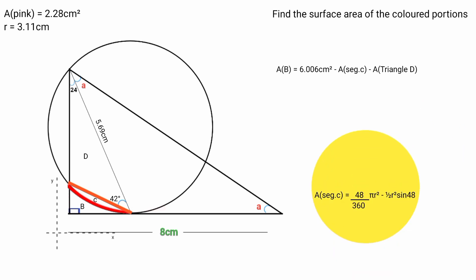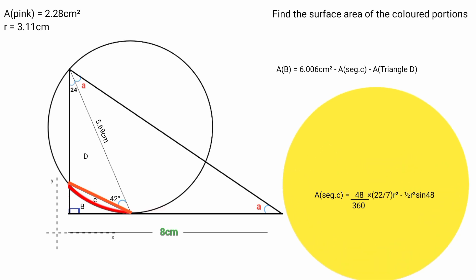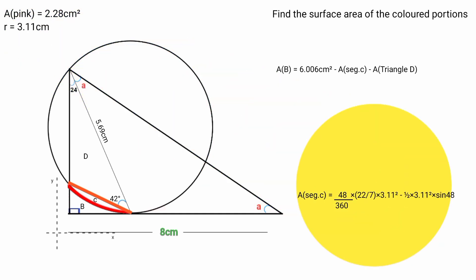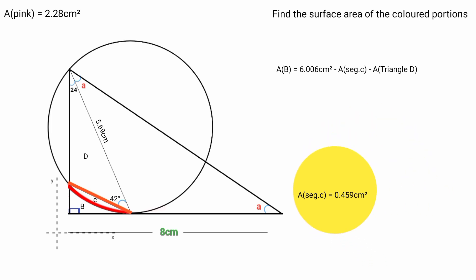Substituting: area of segment C equals 48 over 360 times 22/7 times 3.11 squared minus 1 over 2 times 3.11 squared times sin 48 degrees. Recall the radius is 3.11 cm. Pressing the calculator gives approximately 0.459, so area of segment C equals 0.459 cm squared.